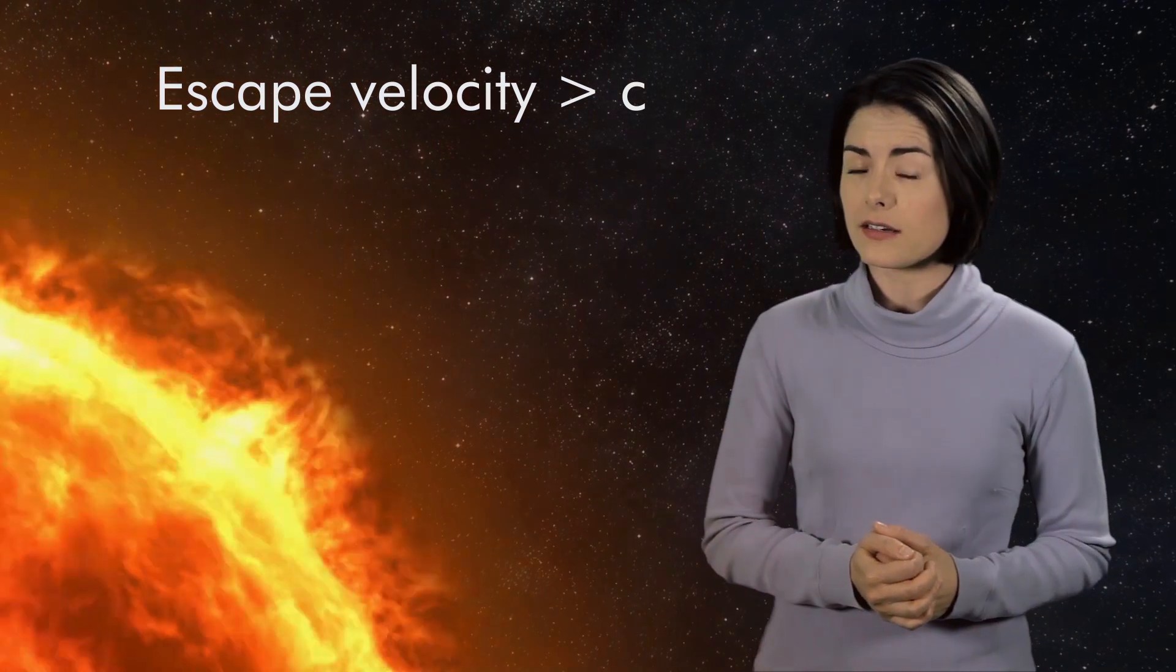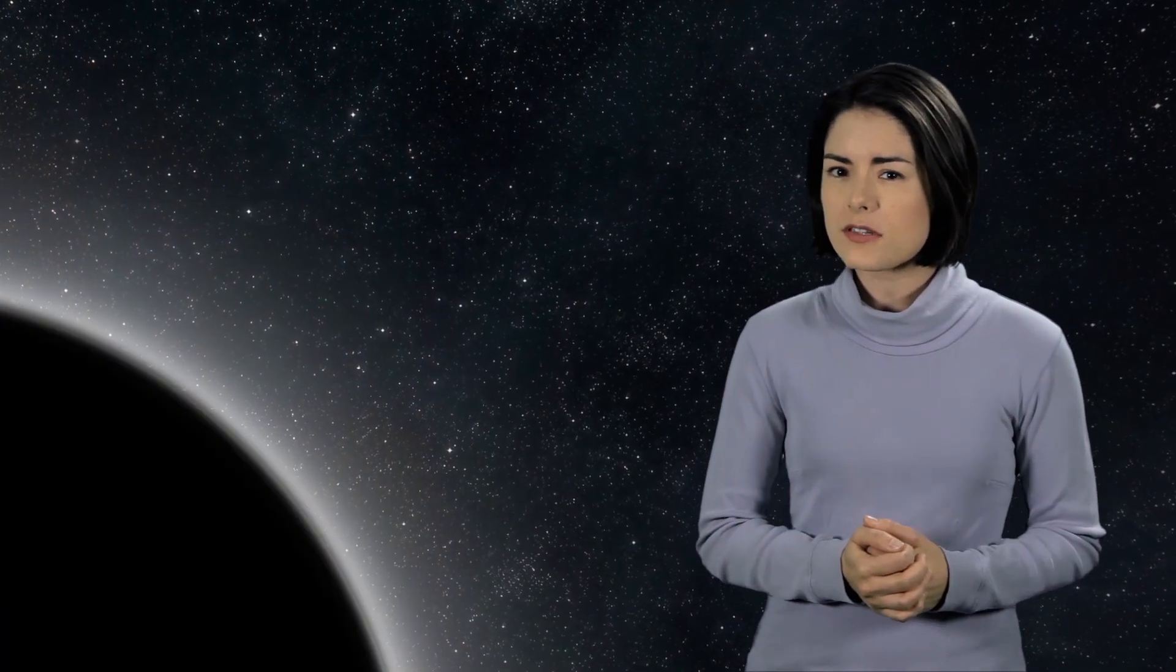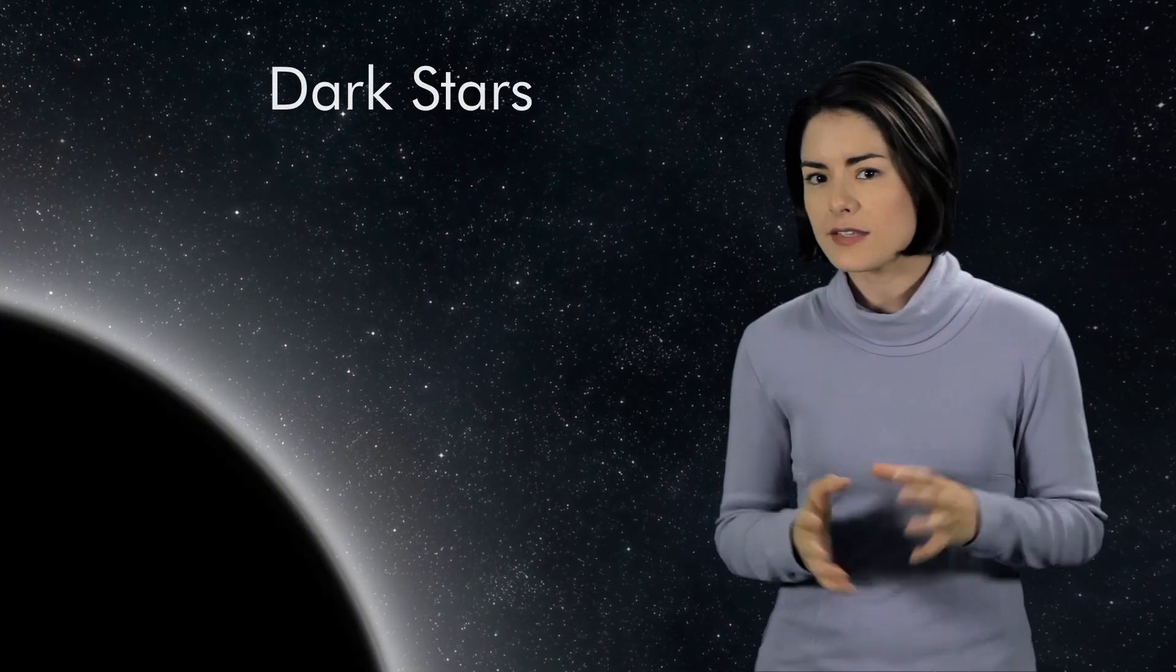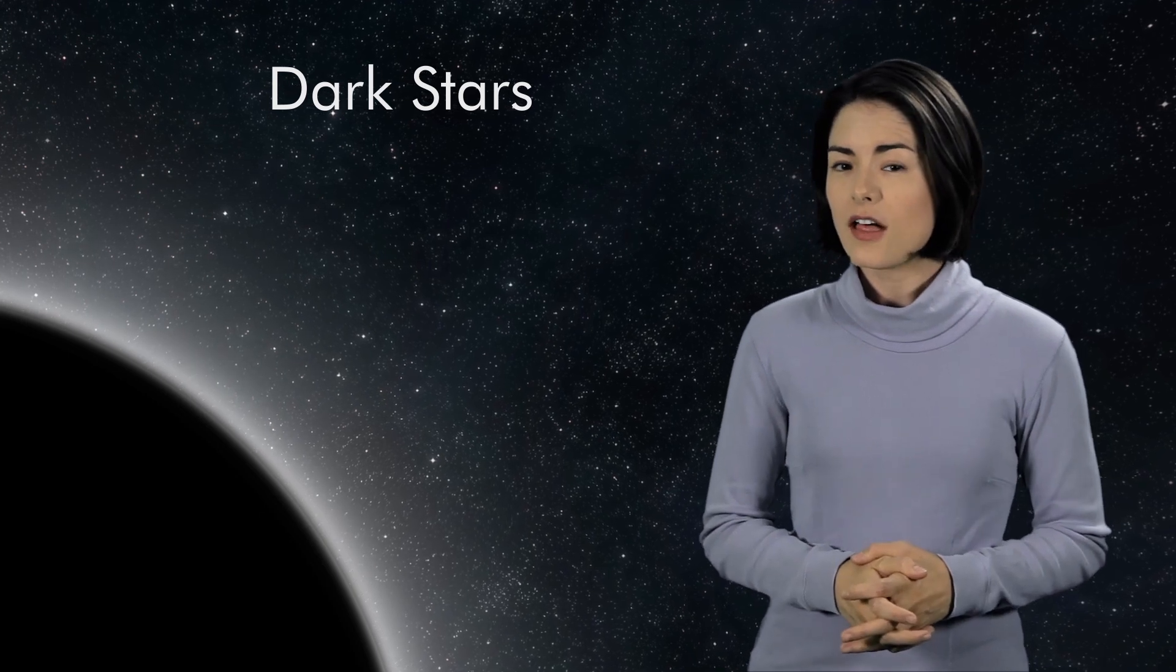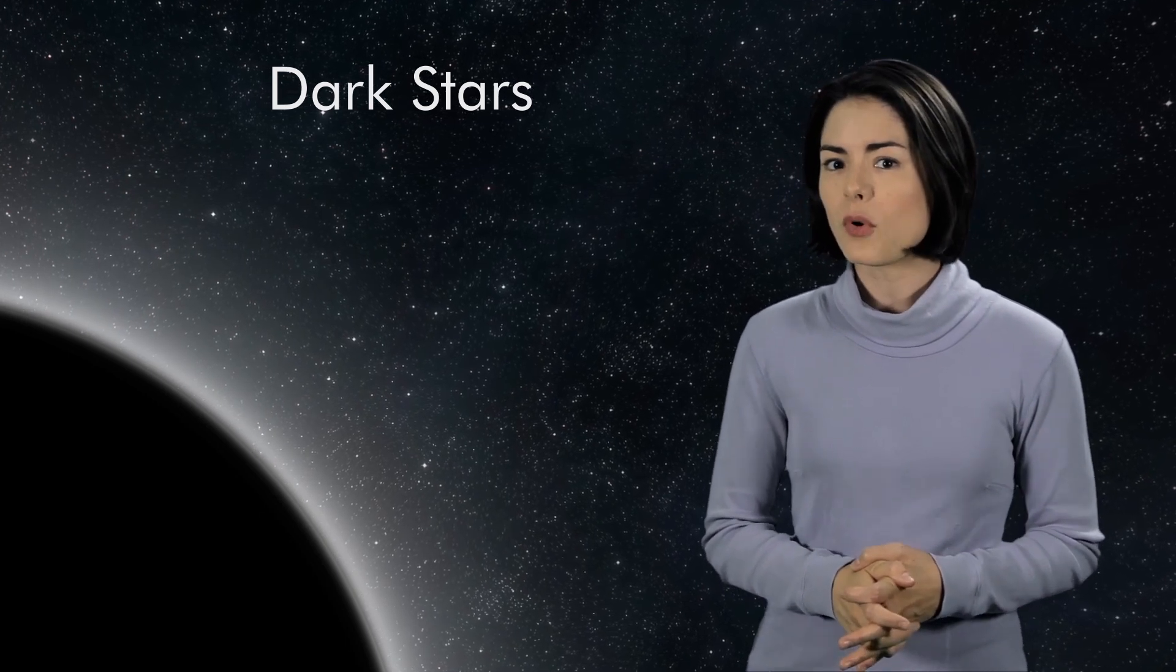In 1783, the English clergyman John Mitchell found that a star 500 times larger than our Sun would have an escape velocity greater than the speed of light. He called these giant objects dark stars because they could not emit starlight. This idea lay dormant for more than a century.